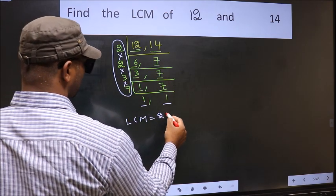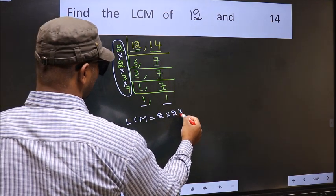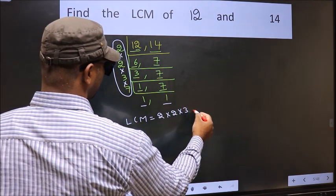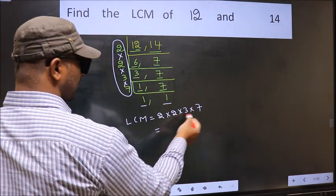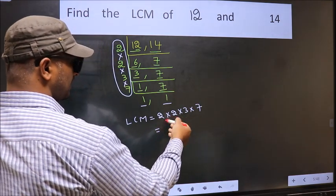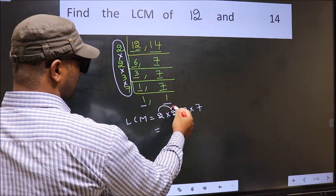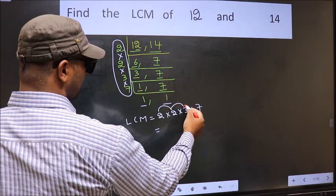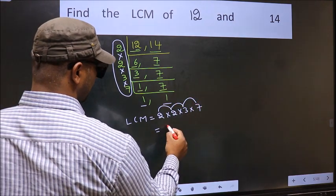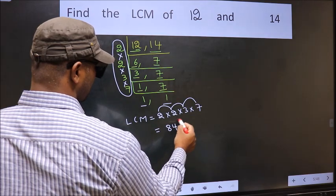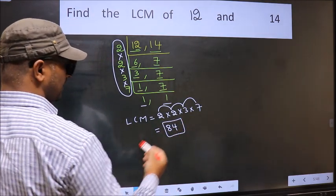That is 2 into 2 into 2 into 3 into 7. So let us multiply these numbers: 2 into 2 is 4, 4 into 3 is 12, 12 into 7 is 84. So 84 is our LCM.